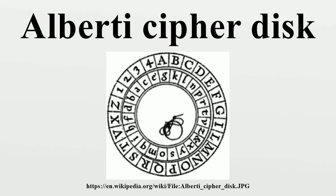The circumference of each disk is divided into 24 equal cells. The outer ring contains one uppercase alphabet for plaintext and the inner ring has a lowercase mixed alphabet for ciphertext. The outer ring also includes the numbers 1 to 4 for the superencipherment of a codebook containing 336 phrases with assigned numerical values. This is a very effective method of concealing the code numbers, since their equivalents cannot be distinguished from the other garbled letters. The sliding of the alphabets is controlled by key letters included in the body of the cryptogram.